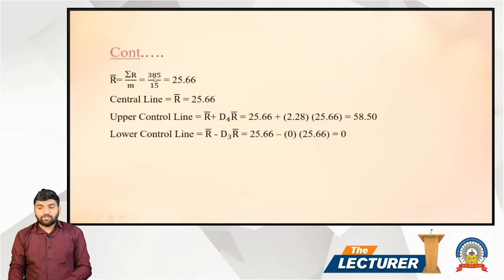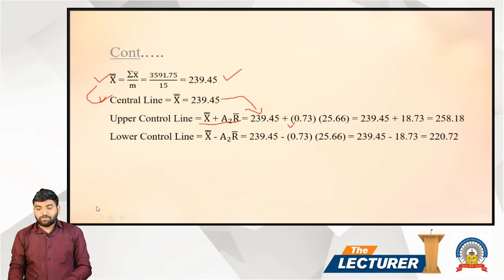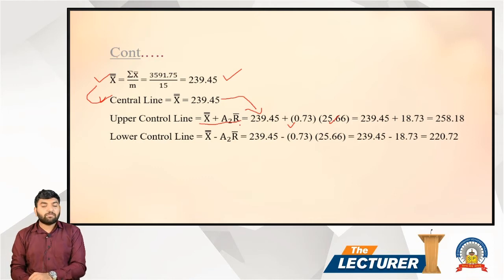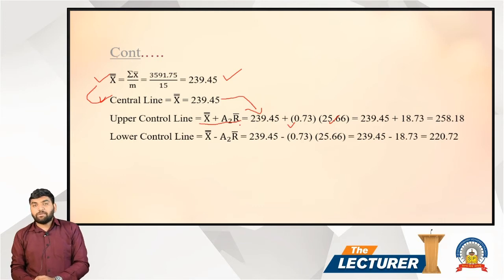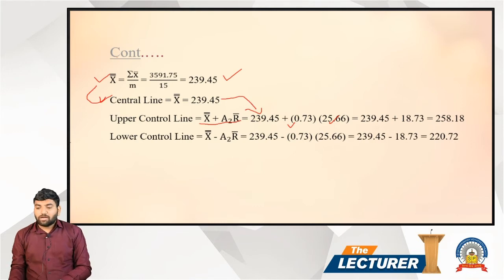The R-bar value is sigma R divided by m, which equals 385 divided by 15, giving R-bar = 25.66. So the UCL calculation becomes: 239.45 plus 0.73 times 25.66. The multiplication gives 18.73, which we add to X double bar 239.45, giving UCL = 258.80 for the X-bar chart.